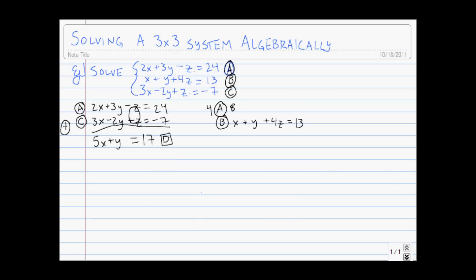Equation b, nothing fancy. It's the exact same thing. x plus y plus 4z equals 13. And then for equation a, we'll have 4 times 2x is 8x. 4 times 3y is going to be 12y. 4 times negative z is going to be minus 4z. And then 4 times 24 is going to be 96, because 24 times 2 is 48, times 2 is 96. So, now that I'm here, I'm in position to eliminate. So, 8x plus x is 9x. 12y plus y is 13y. 0, all equals 109. And again, let's give it a name. Can't call it Rudolph the Red-Nosed Reindeer, because that's something else. This is E.